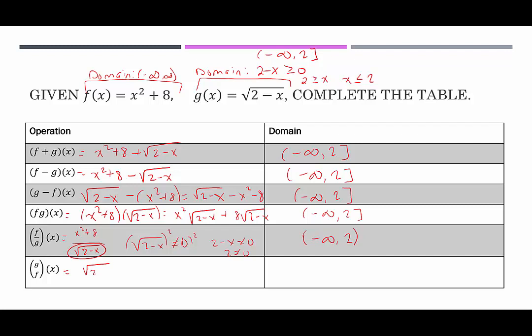The last quotient function, g over f, is √(2 − x)/(x² + 8). We still can't have a negative under the radical. The new denominator x² + 8 cannot equal zero, so x² ≠ −8. Since no real number squared equals −8, there are no additional restrictions. The domain goes back to (−∞, 2] with a bracket, because a zero in the numerator is fine — it was only the denominator that was a problem.